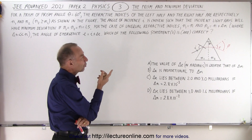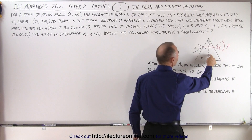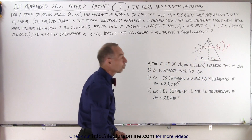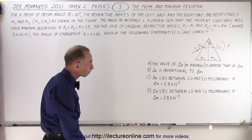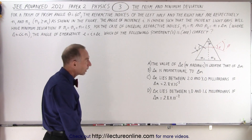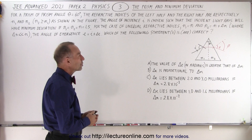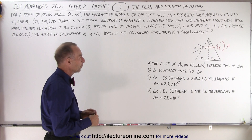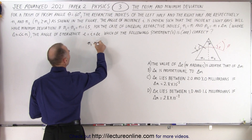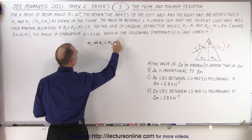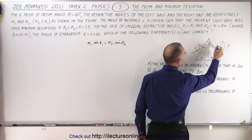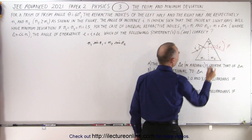So what happens when n1 and n2 are not equal to each other? If n2 is slightly bigger than n1, how does that change the angle of emergence? In order to figure out what we need to do here, we probably want to start with Snell's Law, where we have n1 sine of theta1 equals n2 sine of theta2.